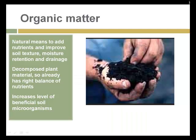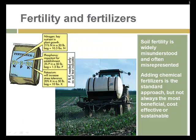Organic matter in the soil is the product of breakdown of plant and animal litter on the ground. Use of organic matter is a natural means to add nutrients and improve soil texture, moisture retention, and drainage — especially in heavy clay and sandy soils. Organic matter holds nutrients and moisture in those difficult soils. It is mostly decomposed plant material, so it already has the right balance of nutrients from the plants that broke down to make it, and it promotes a healthy level of beneficial soil microorganisms.